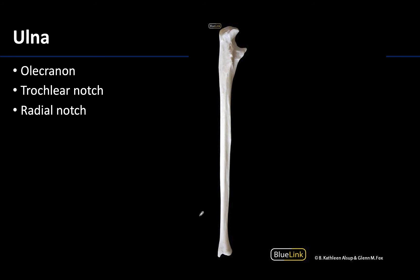Looking at a lateral view of the ulna — identifiable by this notch or depression — this is called the radial notch, and it articulates with the head of the radius to form the proximal radial-ulnar joint. This notch faces laterally to articulate with the lateral radius, because recall the ulna is medial in the forearm and the radius is lateral.